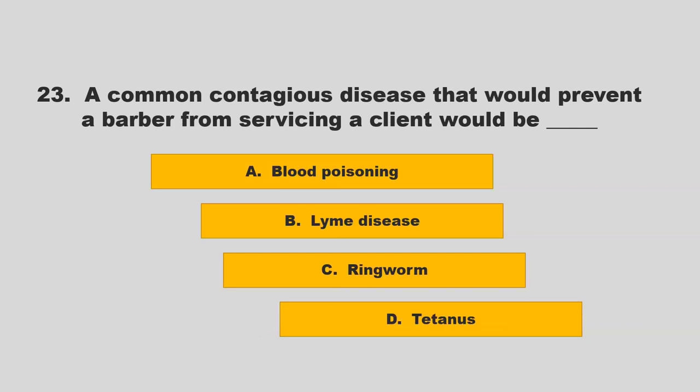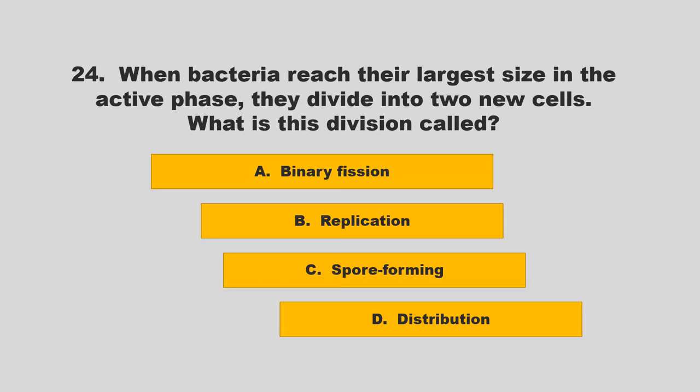A common contagious disease that would prevent a barber from servicing a client would be: blood poisoning, Lyme disease, ringworm, or tetanus. The correct answer is C: ringworm.